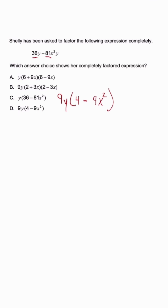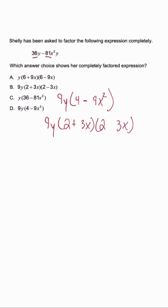And if you look at what's inside the parentheses, we're still dealing with perfect squares, and we have a binomial. So 9y stays the same. The square root of 4 is 2, and the square root of 9x squared is 3x. So we're going to write this expression twice, and then we're going to alternate the signs. So the correct answer would be answer choice B.